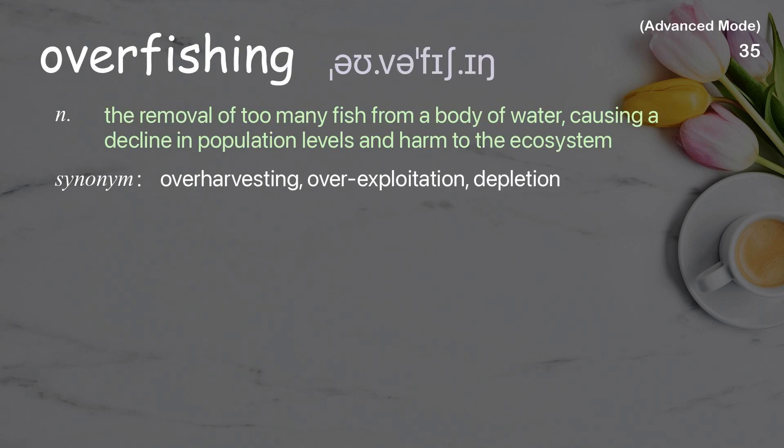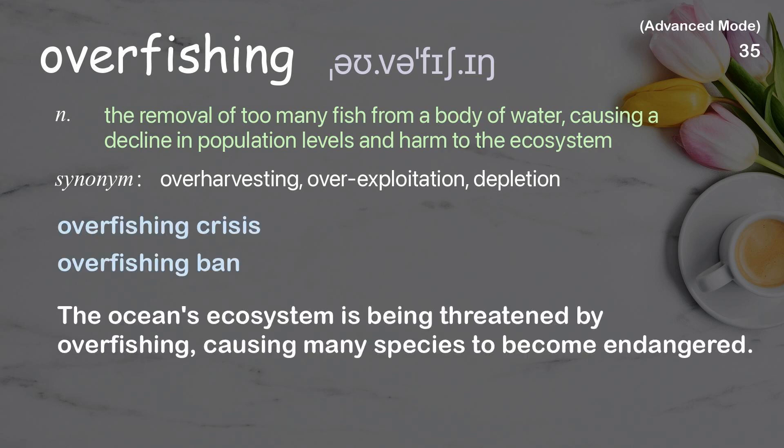Overfishing. The removal of too many fish from a body of water, causing a decline in population levels and harm to the ecosystem. Examples: overfishing crisis, overfishing ban. The ocean's ecosystem is being threatened by overfishing, causing many species to become endangered.